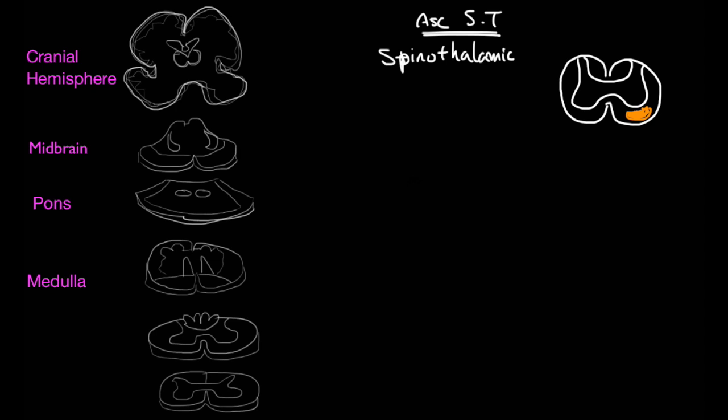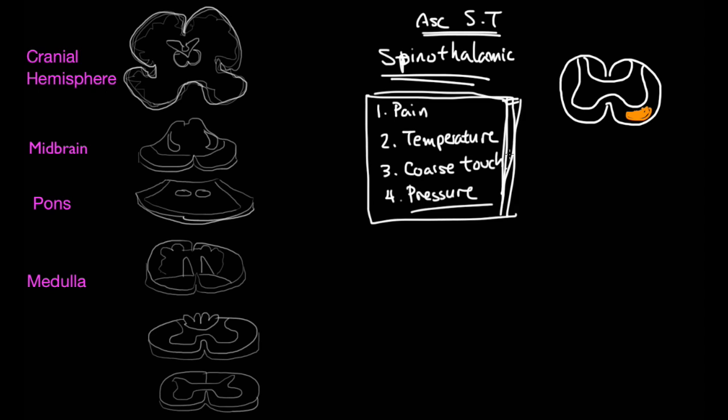But now the question is, what does the spinothalamic tract contain? What information does it bring to the brain? Pain, temperature, coarse touch, and also pressure. So these are the sensory informations that are brought up through the spinothalamic tract. The reason why it's important to know all this is just so that if you know whereabouts these information are contained, if you notice that a patient is lacking in these sensations, you can probably more accurately say which particular region of the spinal cord is possibly damaged.